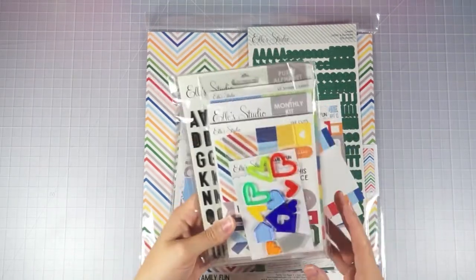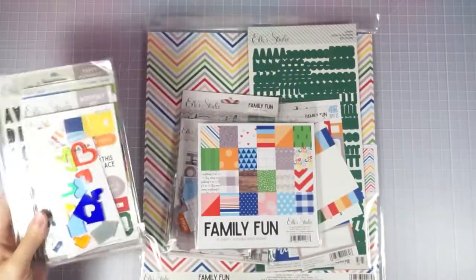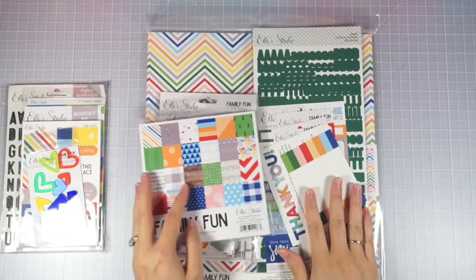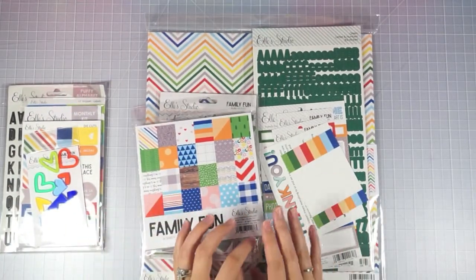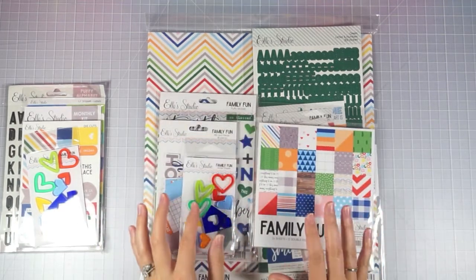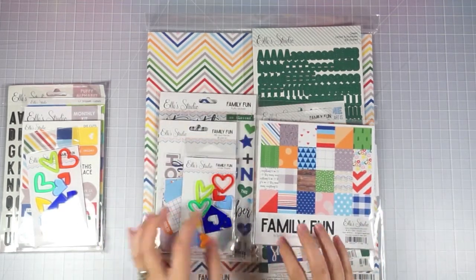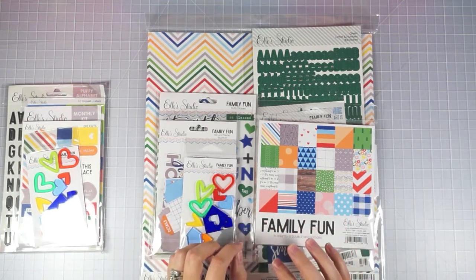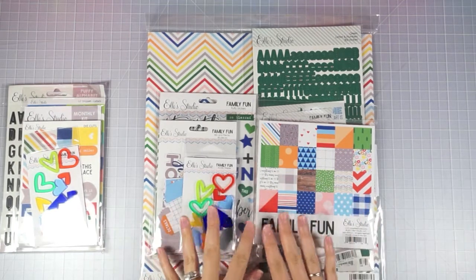So this is some of my extras in the monthly kit here in this part and then these are all of the family fun collection things that were included in the bundle. So I ended up liking a bunch of the things from the family fun collection and I looked at the pricing of everything and actually was cheaper to buy the bundle.